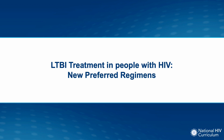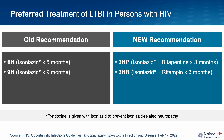Now we will review the preferred LTBI treatment regimens for people with HIV. This table briefly summarizes the old and new recommendations. The new recommendations reflect the most recent updates in the opportunistic infection guidelines. While the older guidelines recommended six to nine months of isoniazid alone as the preferred LTBI treatment, as of February 2022, the OI guidelines now recommend two shorter course regimens: isoniazid plus pyridoxine plus rifapentine taken once weekly for 12 weeks, or isoniazid plus rifampin taken once daily for three months.